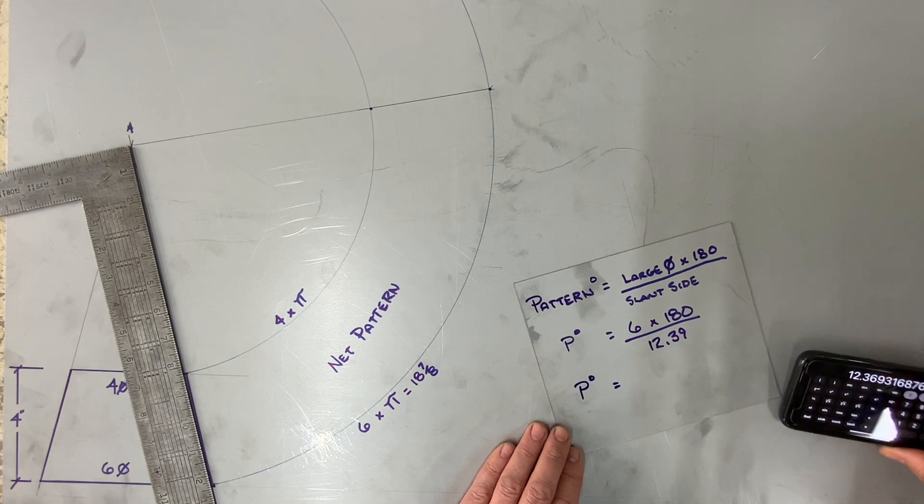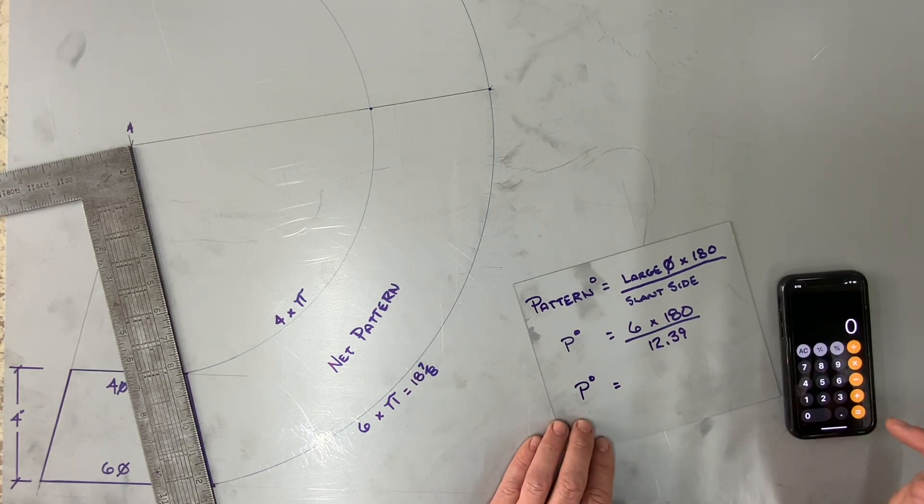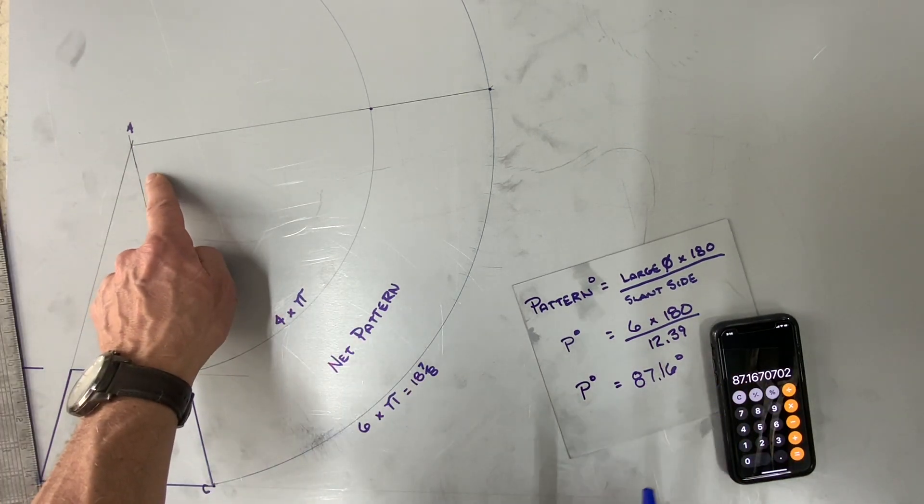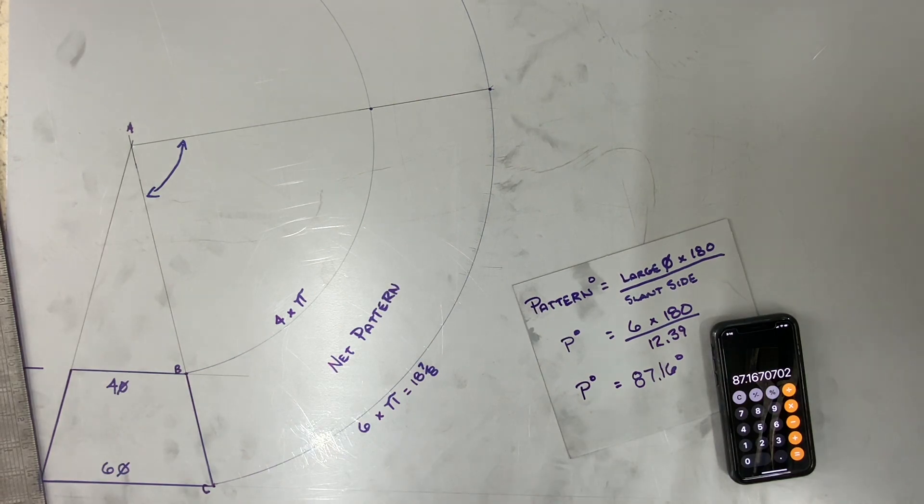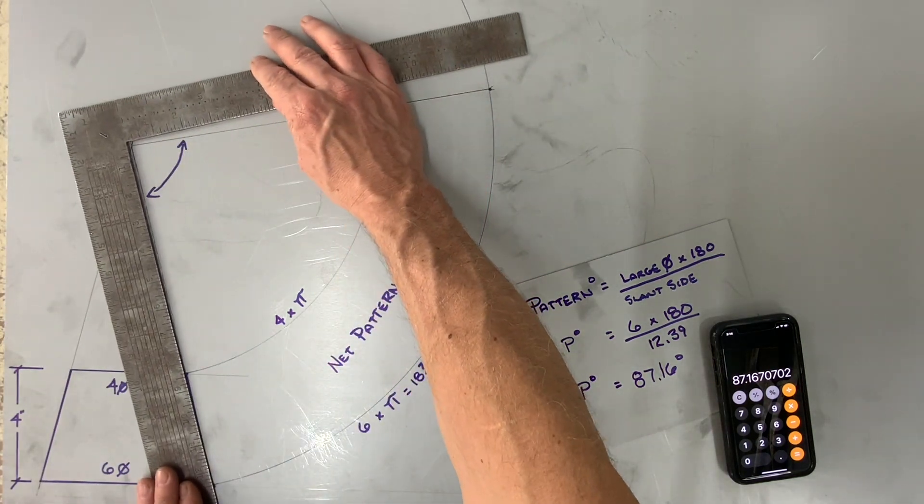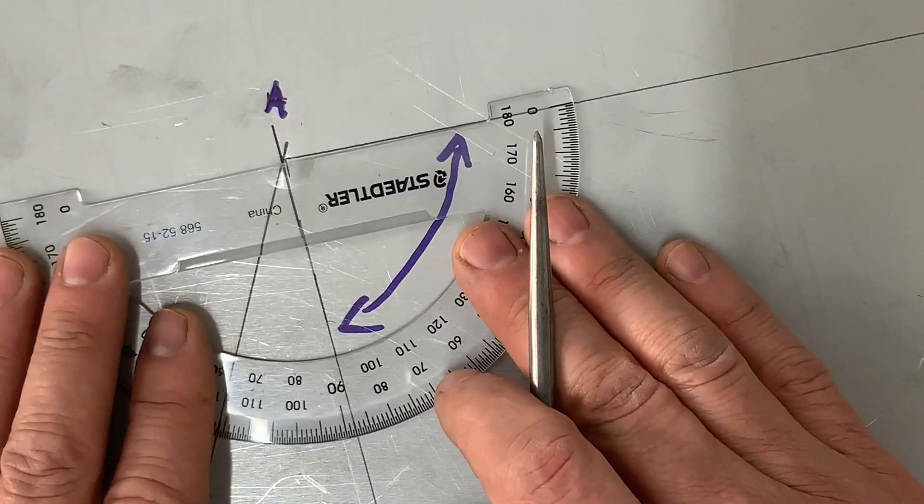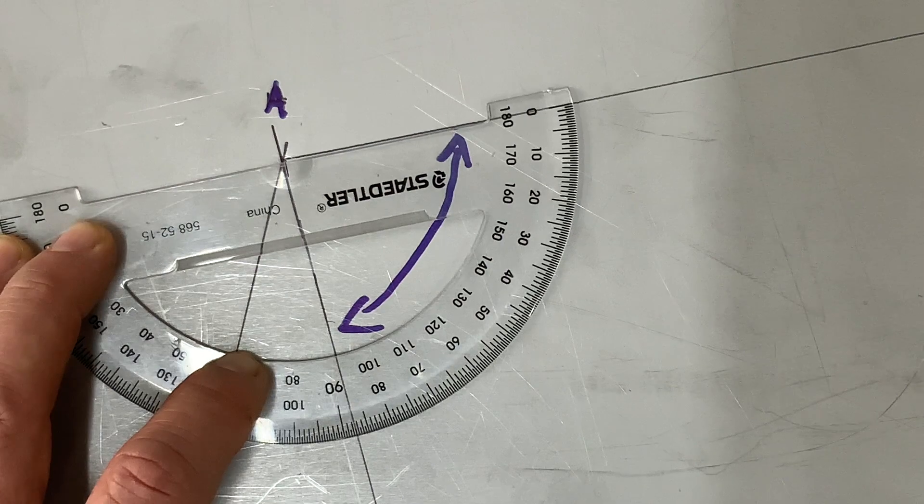So if you finish the formula off: six times one eighty divided by twelve point three nine. Eighty seven point one six degrees. Eighty seven point one six degrees. Eighty five degrees would be close enough. As you can see with this ninety degree angle, I am less than ninety. So let's just check it and see how close we are. Use a protractor, and you can see that eighty, eighty five, eighty six, eighty seven.